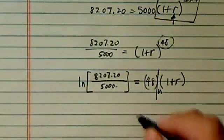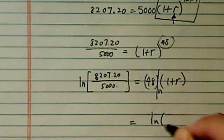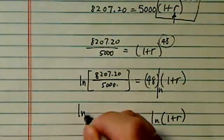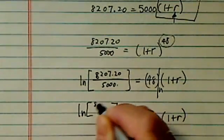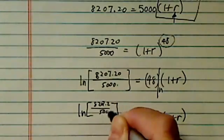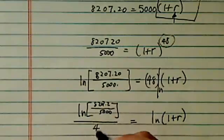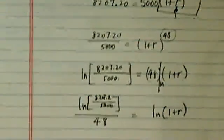Let's divide it by 48. So I have natural log of 1 plus R on this side. Okay, and then this big natural log of 8207.20 divided by 5000. That's just a number. It's not a pretty number, but it's a number nonetheless. Divided by 48.